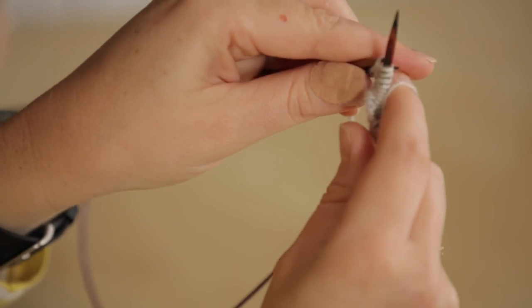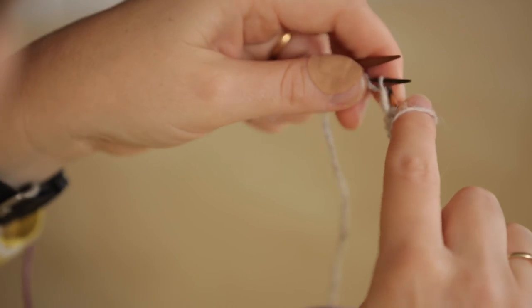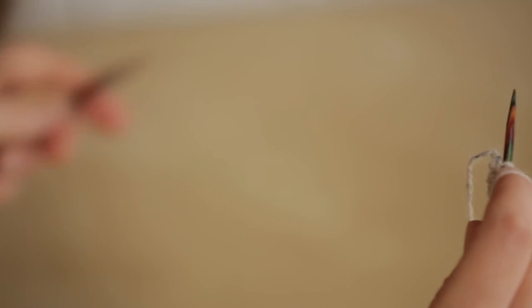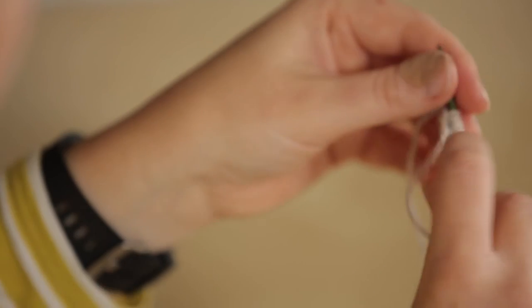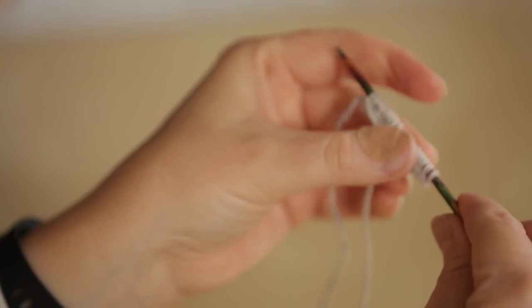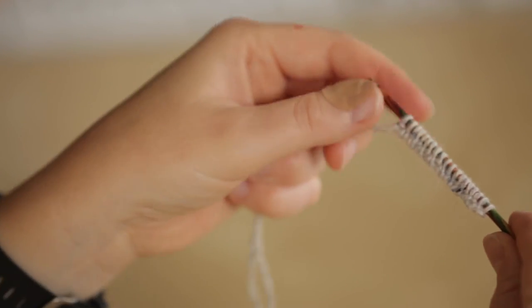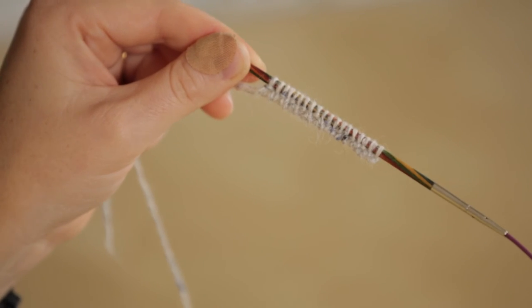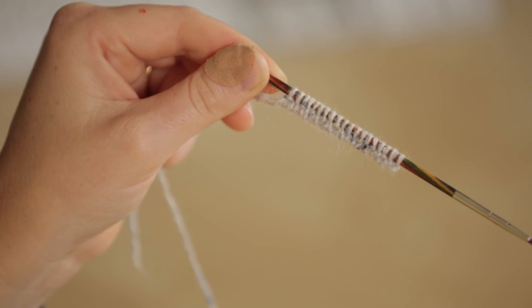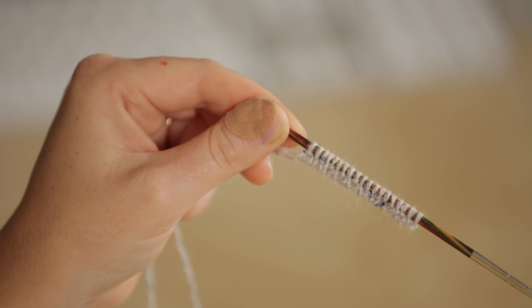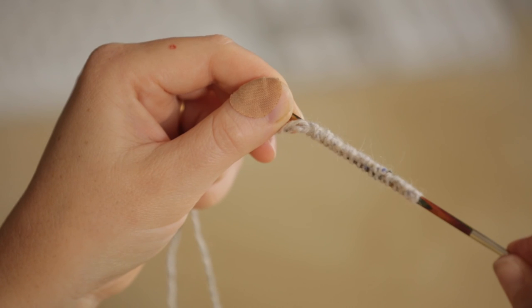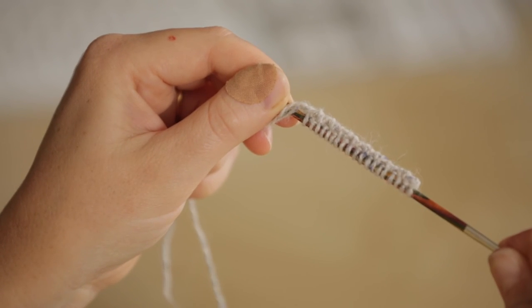Last ones, always have to be really careful with the last ones because they can be a bit frisky and want to drop off. And the very final one. And we now have our tubular cast on edge with the stitches wrapping around from one side to the other.